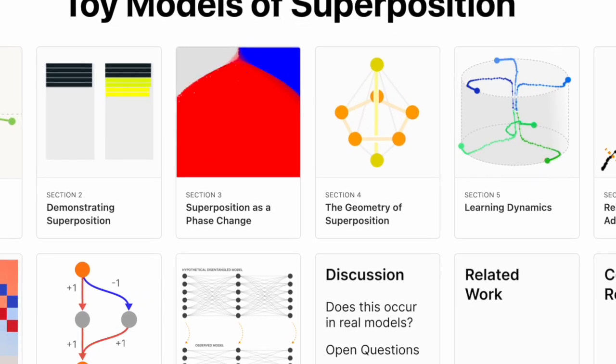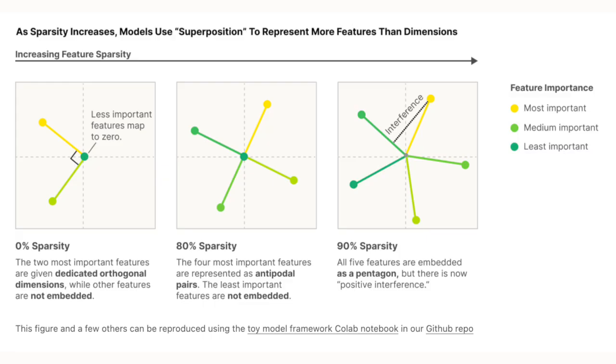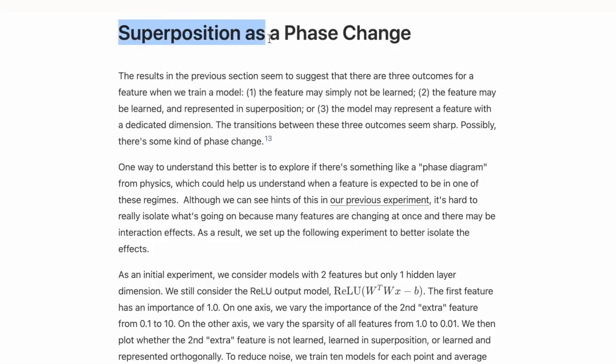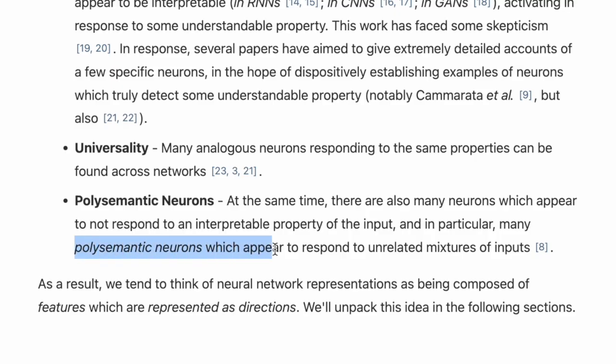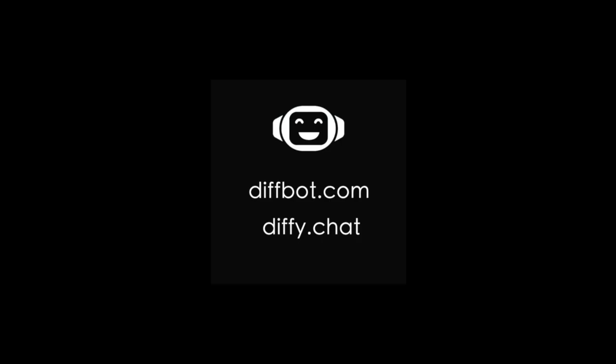So far we've covered the core geometry of superposition that neural networks can represent many more features than they have dimensions by accepting some interference. But there are still other aspects we haven't touched on from the original paper, like phase transitions where features transition from orthogonal to superposed arrangements as their importance changes, or how individual neurons become polysemantic, responding to multiple unrelated concepts. We'll likely save these in another video.